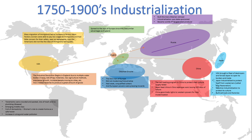In places that were industrialized, tenements were formed — these were quick, crude structures that people lived in, crowded and packed, with trash everywhere and no indoor plumbing, leading to increased spread of disease. A new emerging middle class also appeared: the upper business-owning class, the lower factory-working class, and the middle class, which included white-collar workers in office jobs. There was also the new idea of the cult of domesticity — that a woman's role is to create a home as a safe haven. Finally, an increase in smog and water pollution was common within all these regions.